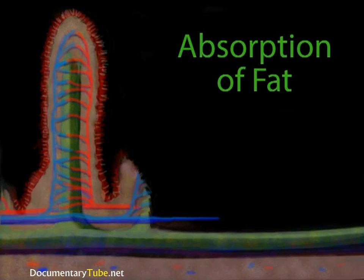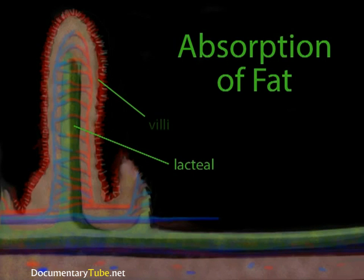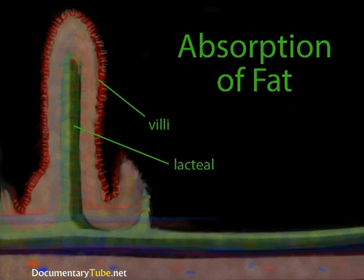The lymphatic system's second function takes place in the small intestine as well — the absorption of fats. There are specialized lymph vessels called lacteals in the intestinal villi. These pick up fats released from digested food and absorb them into the villus tissue. The liquid in the vessels takes on a milky color and, instead of being called lymph, this fluid is called chyle. The chyle eventually gets dumped into the subclavian vein, just like lymph. That is how the fats enter the circulatory system.